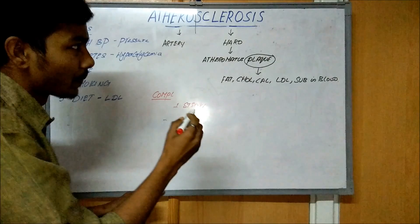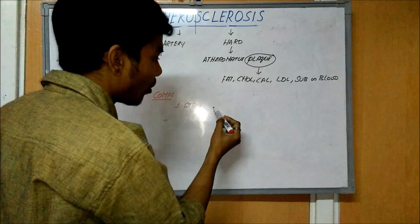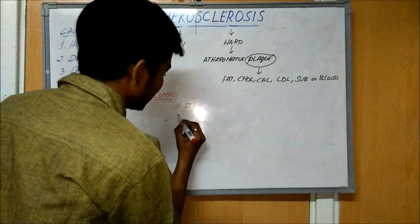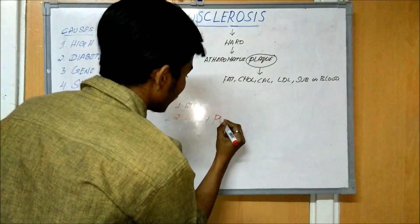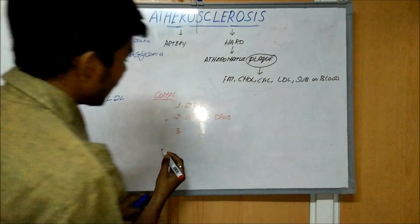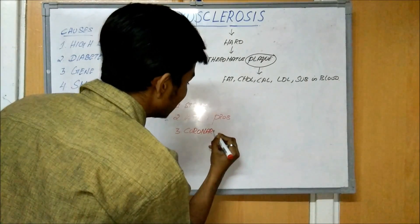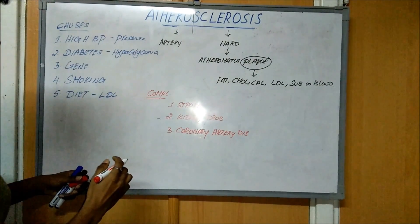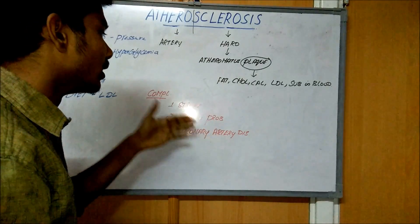Now we will see the complications. First, stroke: if there is a plaque or atherosclerosis in the cerebral arteries, it makes a block in the arteries which leads to stroke. Second, kidney problems. Third, coronary artery disease. These are the three main complications of atherosclerosis.